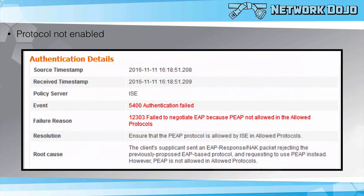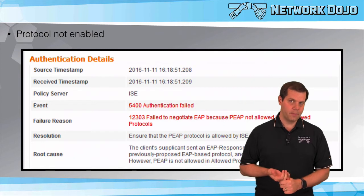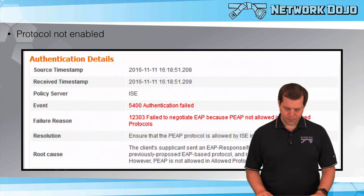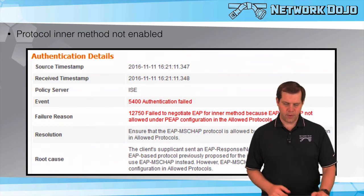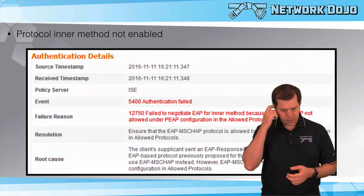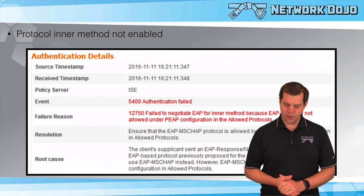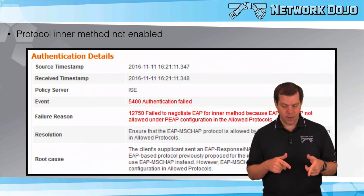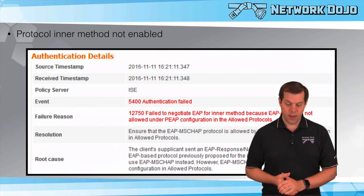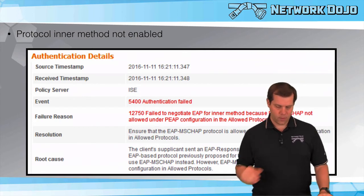Looking at common errors around the allowed protocols list: number one, if the protocol they want to use is not allowed in the allowed protocols list, you will see 'failed to negotiate EAP' — because PEAP is not allowed in the allowed protocols list. This means the client tried to use PEAP, but PEAP is not turned on. A similar error would be for tunneling protocols where the inner method is not allowed. In this case, PEAP is allowed, but when they tried to do PEAP, the inner method they attempted to use was MSCHAPv2 — and if that is not allowed, we see 'failed to negotiate EAP for inner method, because EAP MSChap is not allowed under PEAP.'